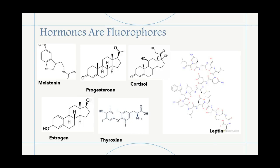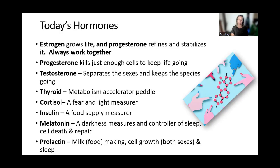For those new to the idea of hormones carrying light: if you look at the structure of estrogen, progesterone, testosterone, thyroid hormone, cortisol, and melatonin, they all have ring structures — they are aromatic molecules. This makes them very well suited for absorbing light from the sun via other molecules, or absorbing UV light generated inside the body.